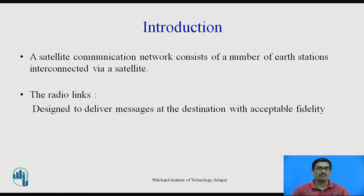First, introduction. A satellite communication network consists of a number of Earth stations which are interconnected via satellite. With the help of the satellite, we can communicate to each of the Earth stations. Now the concept for this communication is the radio links. The radio link is defined as designed to deliver messages at the destination with acceptable fidelity.